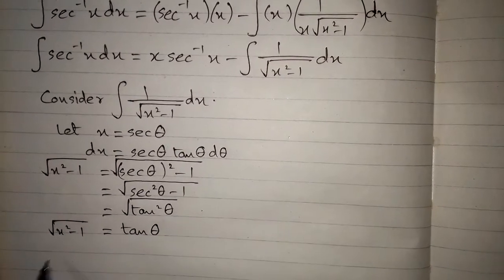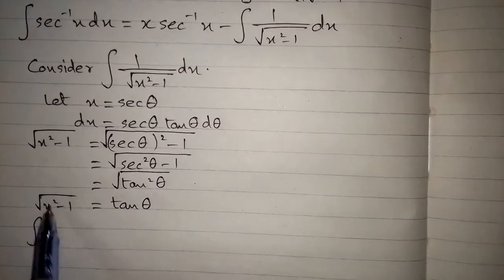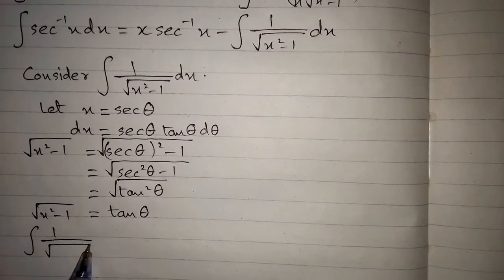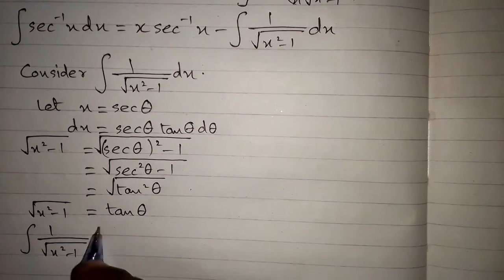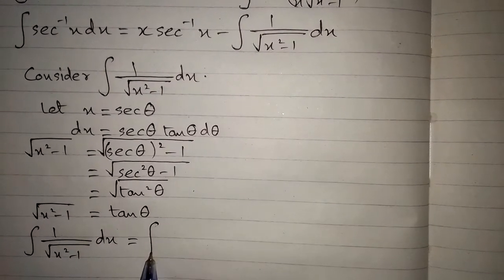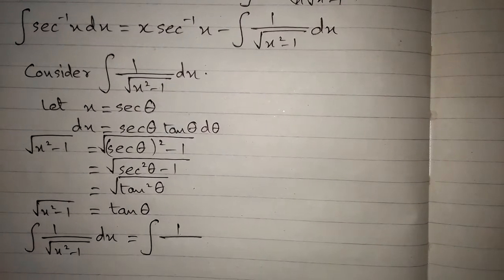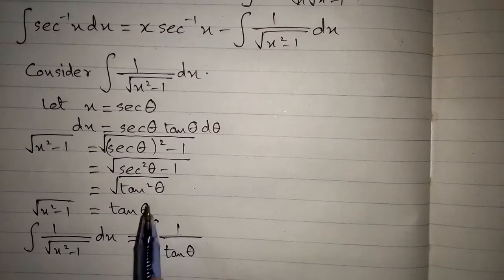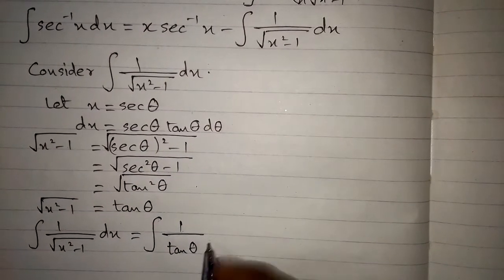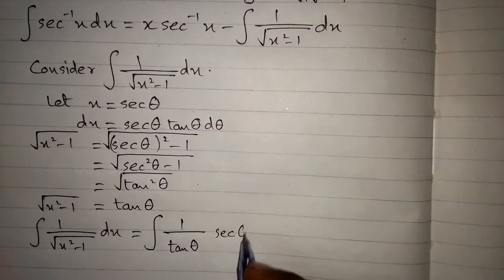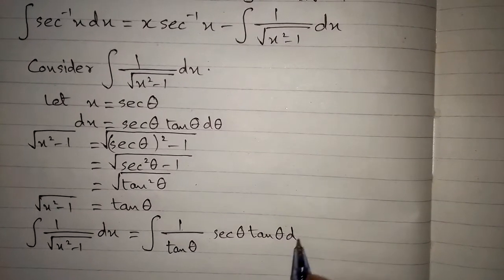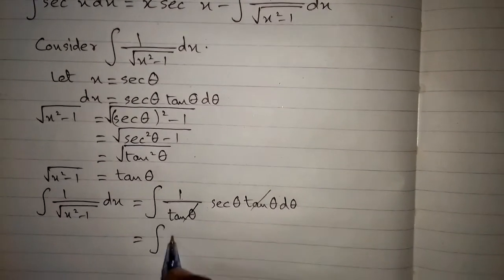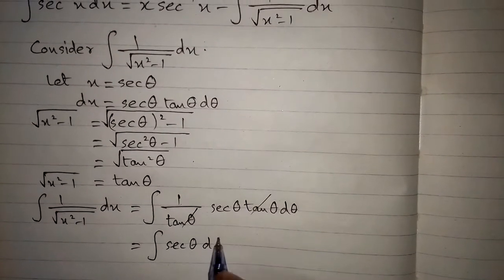Now we will substitute into the integral. So 1 upon square root of x squared minus 1 dx becomes 1 upon tan theta times sec theta tan theta d theta. After cancellation we have the integral of sec theta d theta.